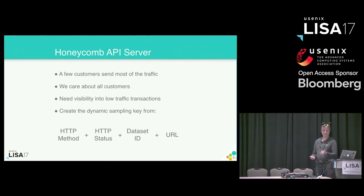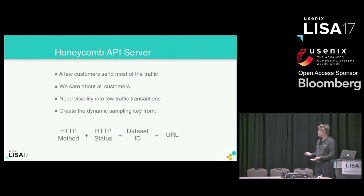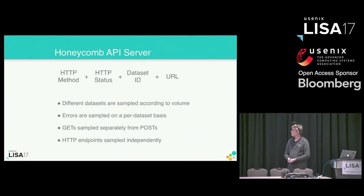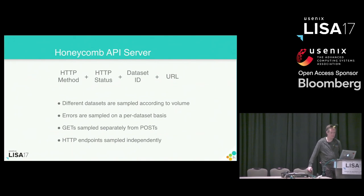So we use a combination of the HTTP method, status, dataset — which is a unit of interaction with Honeycomb as a service; customers send data into datasets, effectively identifying customer and a particular type of their traffic — and the URL. There isn't a lot of variation in URLs because it's a REST API, so we can safely use it to differentiate traffic. The technical effects of using those four elements as keys are: high-volume and low-volume datasets both get through the sampling filters; errors are caught through the HTTP status code; the same URL for a GET or a POST is sampled differently so I can understand reads versus writes.